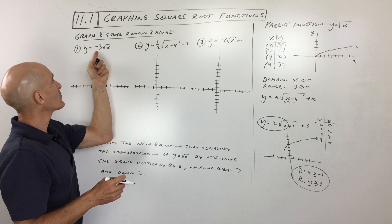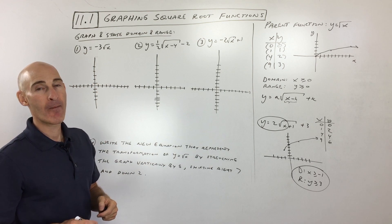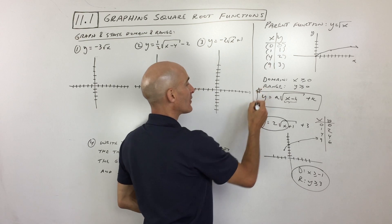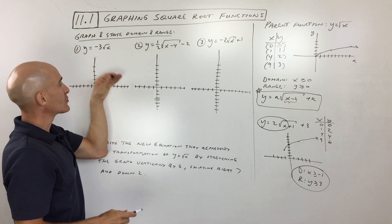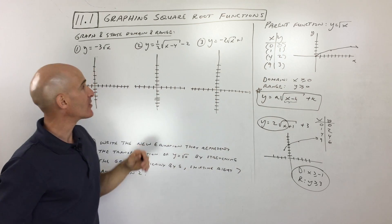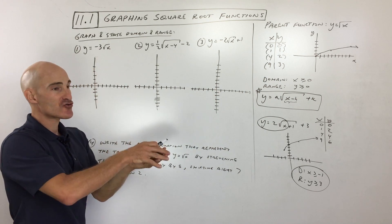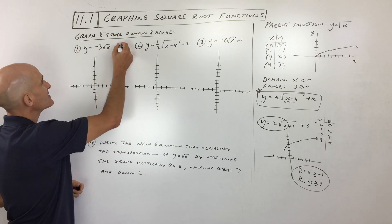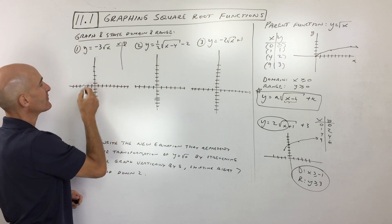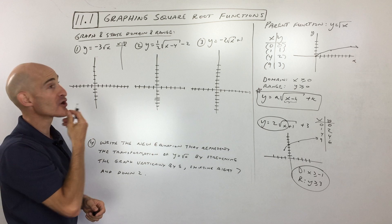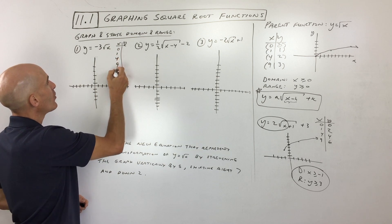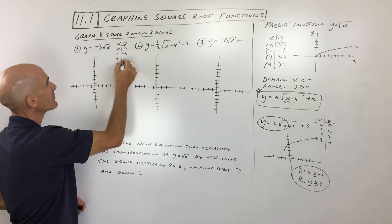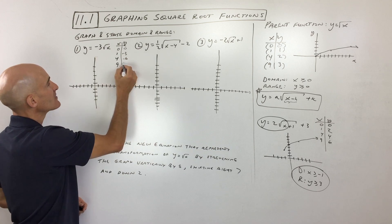Let's practice: graph y equals negative three times the square root of x. We can see that a is negative, so that's going to reflect it — the mirror image over the x-axis. The three is going to stretch it since it's greater than one. There's no shift. Making a table from the origin: square root of zero times negative three is zero; square root of one times negative three is negative three; square root of four is two times negative three is negative six; square root of nine is three times negative three is negative nine.